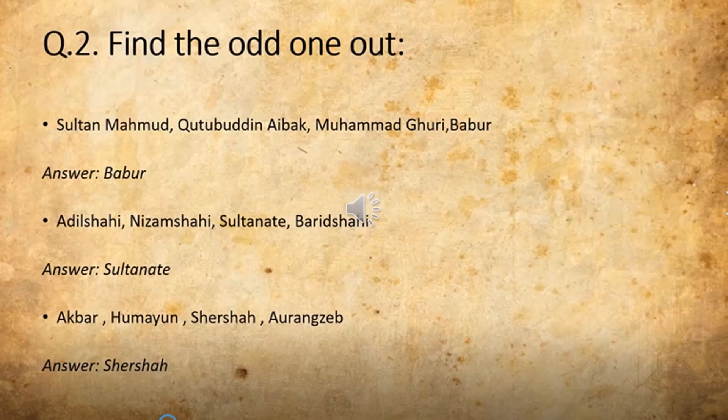Because one was a Sultan, one was a governor, the others were Sultans. The odd one out here is Babur, because he was a Mughal Emperor. We have discussed all these things. You are going to identify the two Sultans and one Mughal Emperor — the odd one out is the Mughal Emperor, that is Babur.